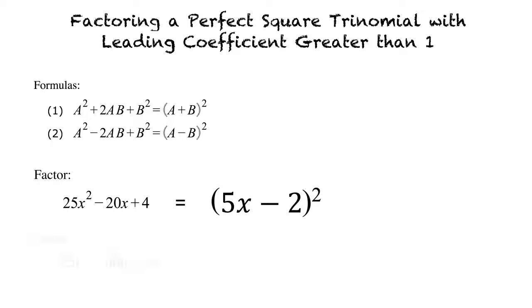Let's take a look at one more example using the other formula: Factor 25u squared plus 60u plus 36. Since we have a positive sign for the second term of the equation, we find the square roots for the first and last term and add them together, squared, for our final result. Doing so gives us a final result of 5u plus 6, squared.